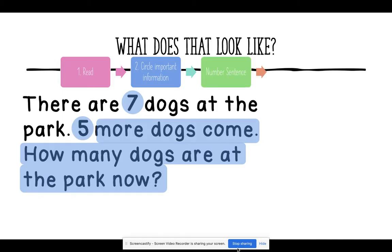Now we write our number sentence. To write our number sentence, we need these three different things: seven, the five, and more dogs to come. The seven indicates how my number sentence is going to start.